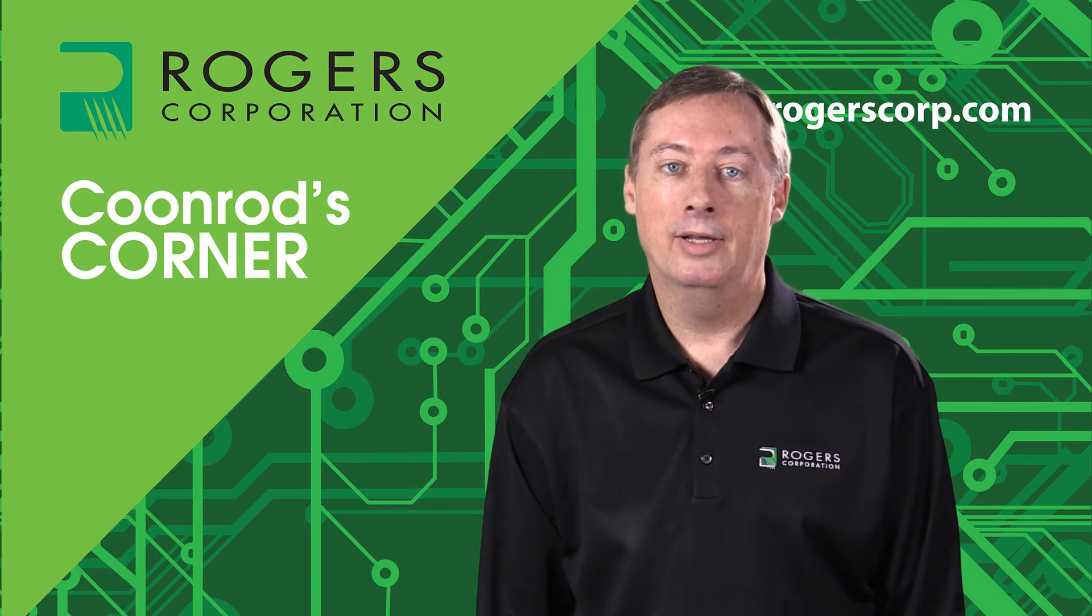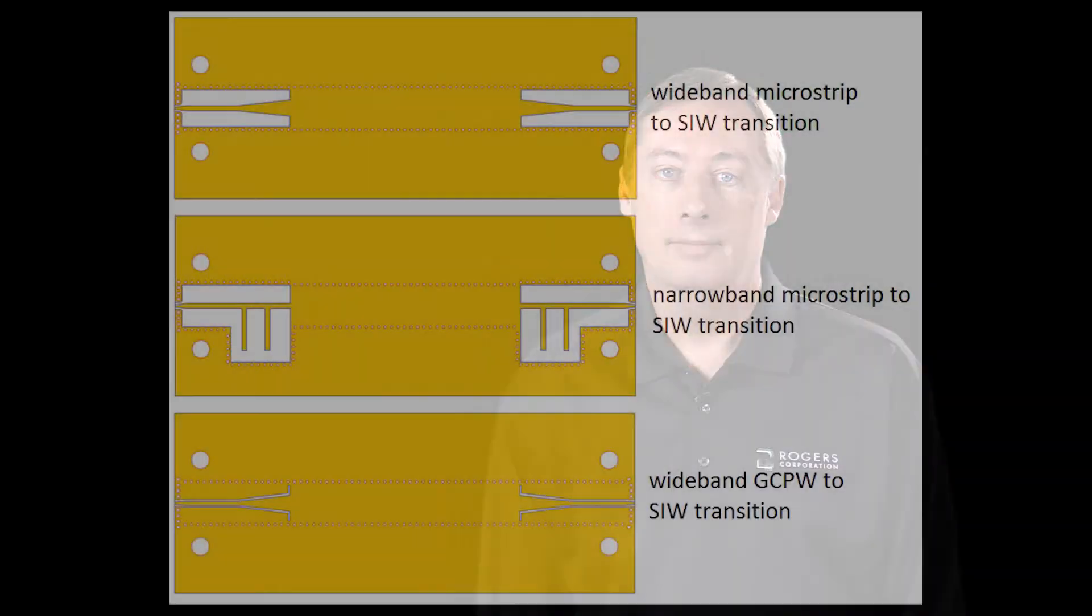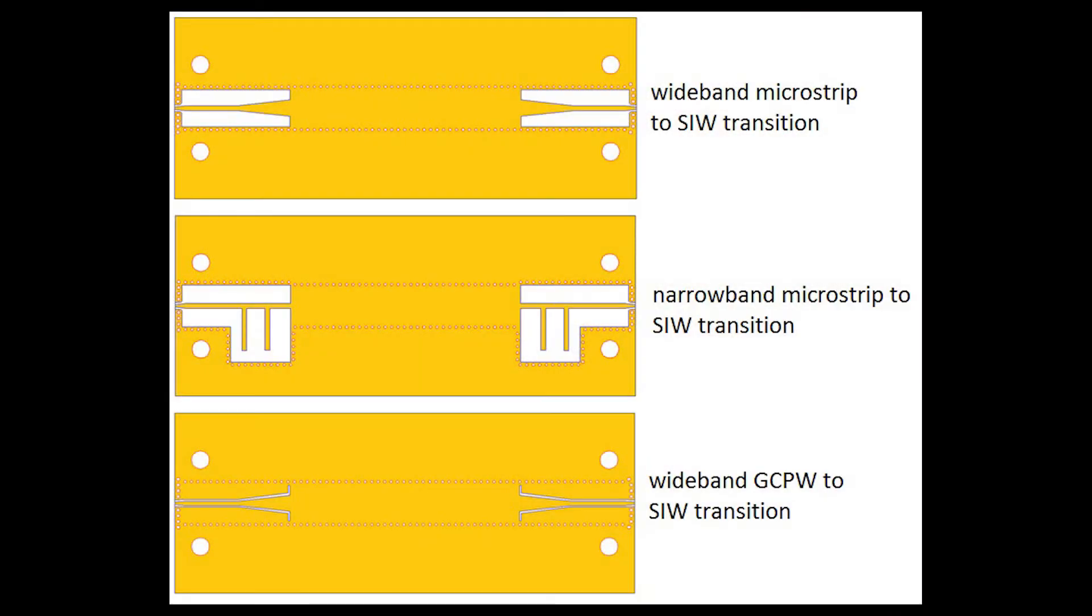So to begin with, let's take a look at the transition, the signal transition into an SIW. What I'm showing here in this picture are three different drawings of the same SIW structure in the body, it's just the transition to the SIW is what's different.